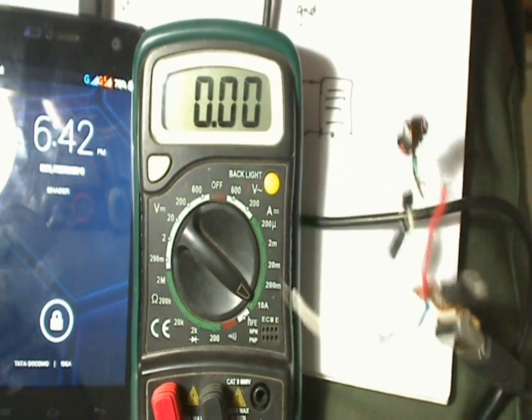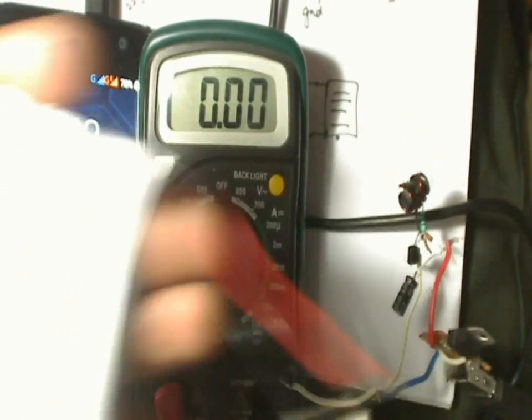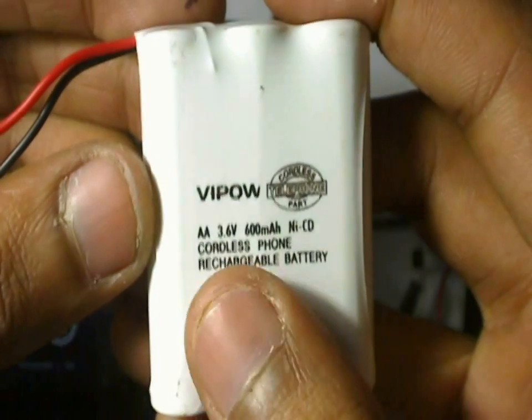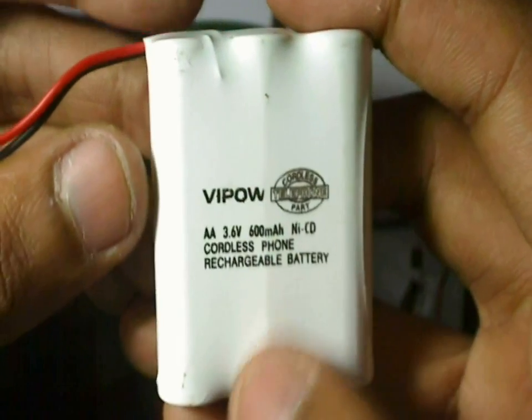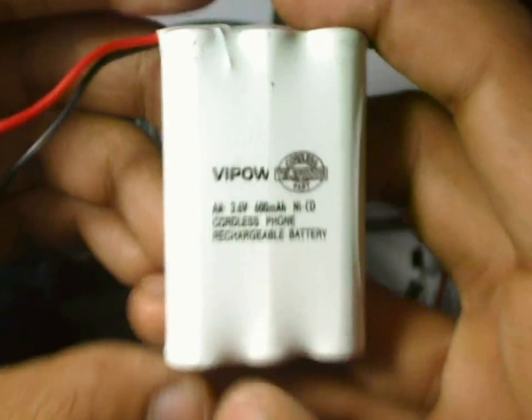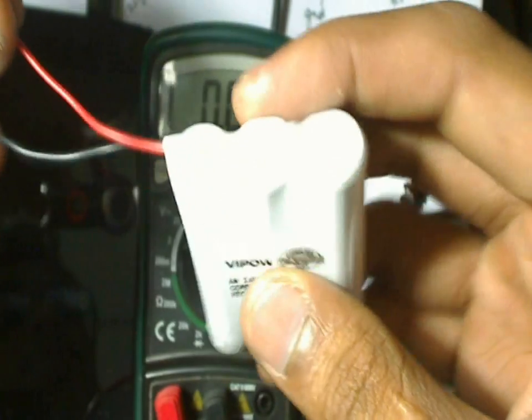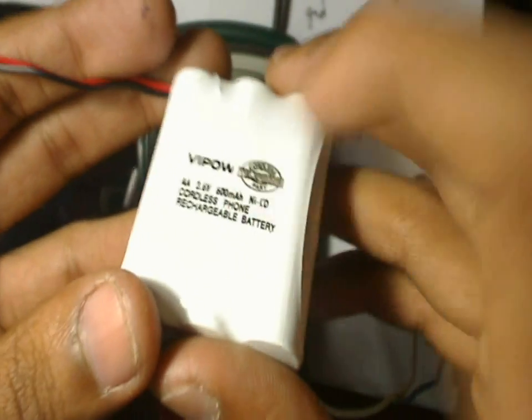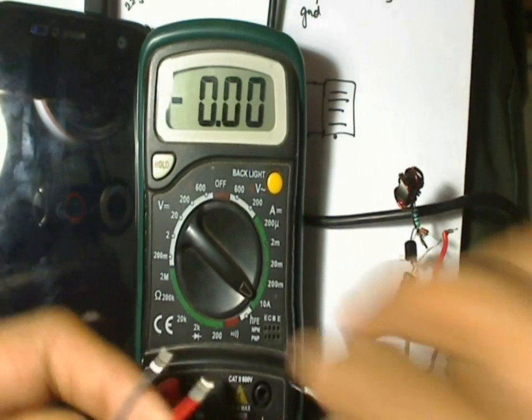I also have a rechargeable battery pack here. This is a 3.6 volts battery pack, 600 milliamps. These are nickel cadmium batteries from a cordless phone which I bought recently, new batteries just to make this project. The voltage of this is around 3.6 to 4 volts. Fully charged it gives around 4 volts. Now let's test the circuit. I'll connect the negative terminal directly and the positive terminal here, and negative terminal to the battery.